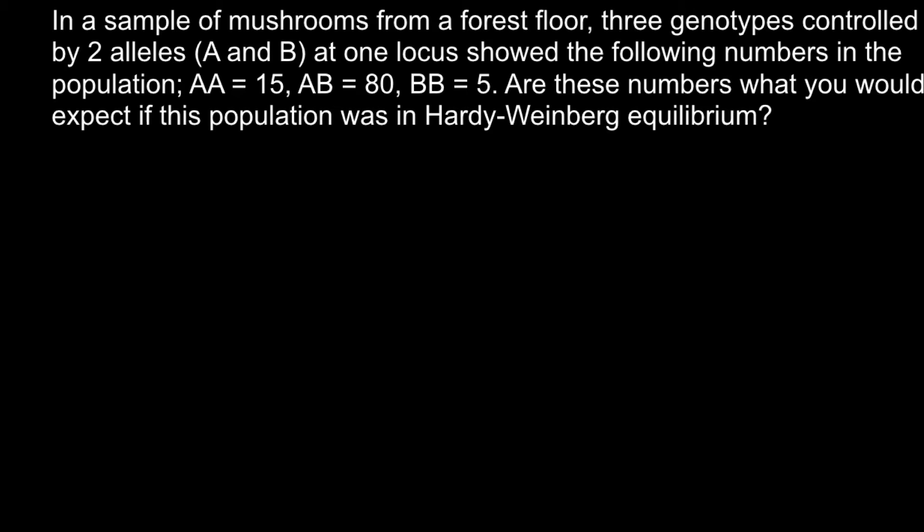In a sample of mushrooms from a forest floor, three genotypes controlled by two alleles A and B at one locus show the following numbers in the population: homozygous AA = 15, AB = 80, and BB = 5.